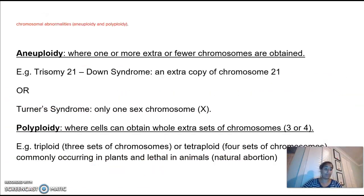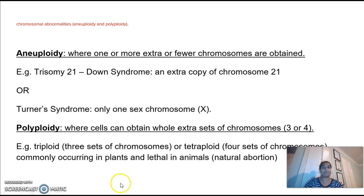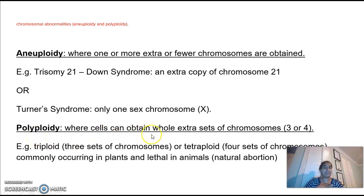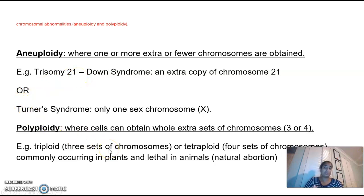The first one on our list is looking at chromosomal abnormalities. Looking at mutations, one part covered this year was the difference between aneuploidy and polyploidy. Aneuploidy is basically where there is one extra or one less chromosome in your karyotype. A prime example is trisomy 21, where we have an extra chromosome 21, which signifies Down syndrome. Polyploidy, on the other hand, is where cells obtain extra whole sets of chromosomes — triploids and so on. With aneuploidy, people can survive; with polyploidy, people can't — it's lethal for animals, but quite common in plants.